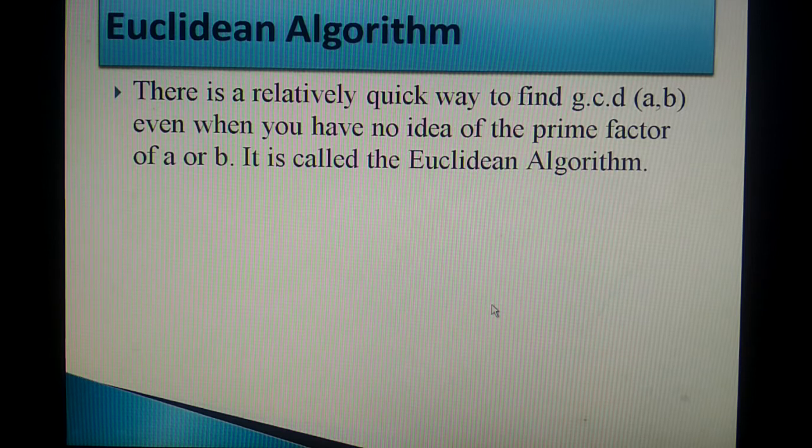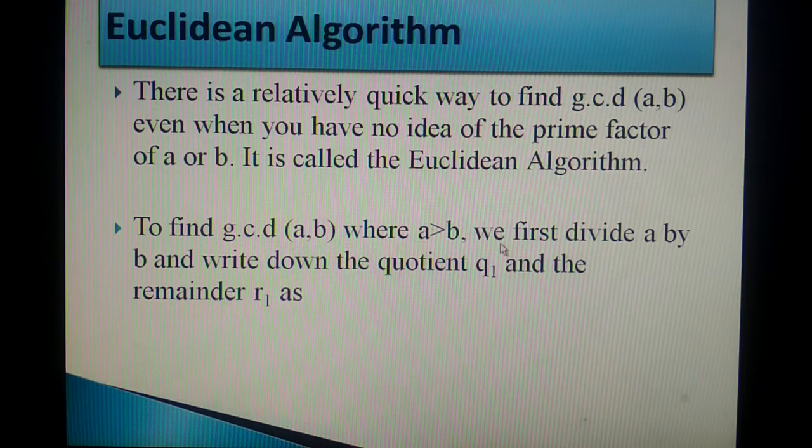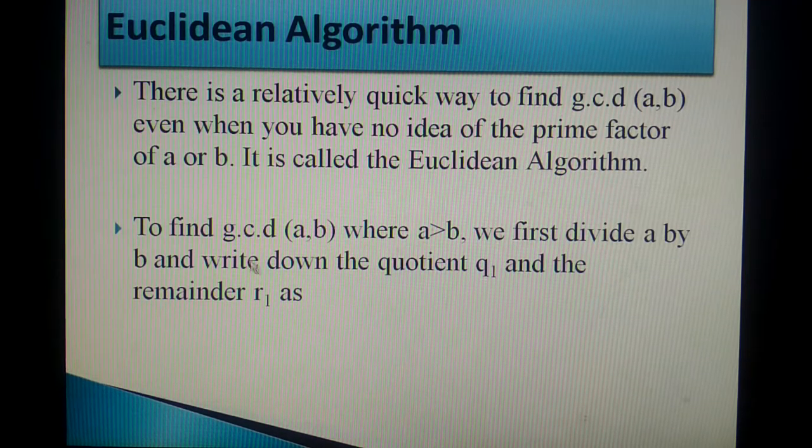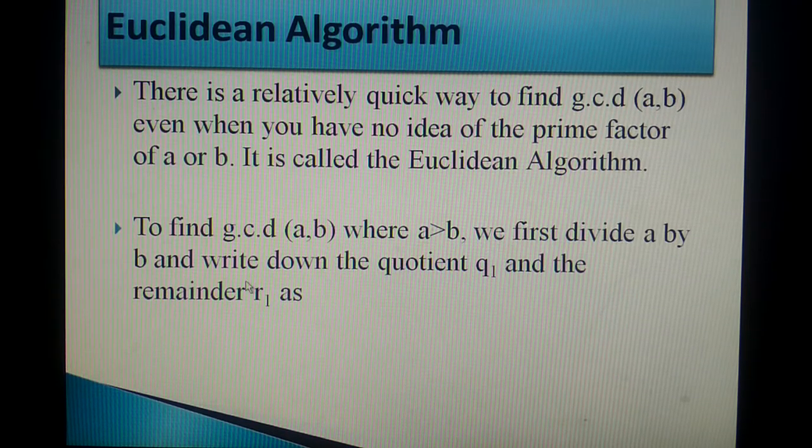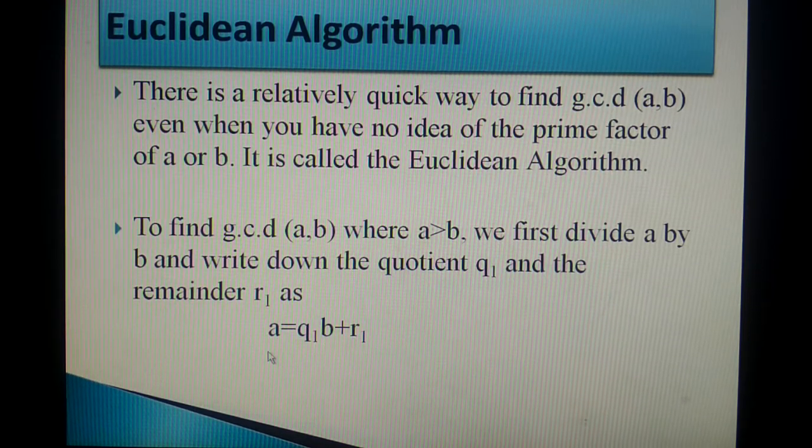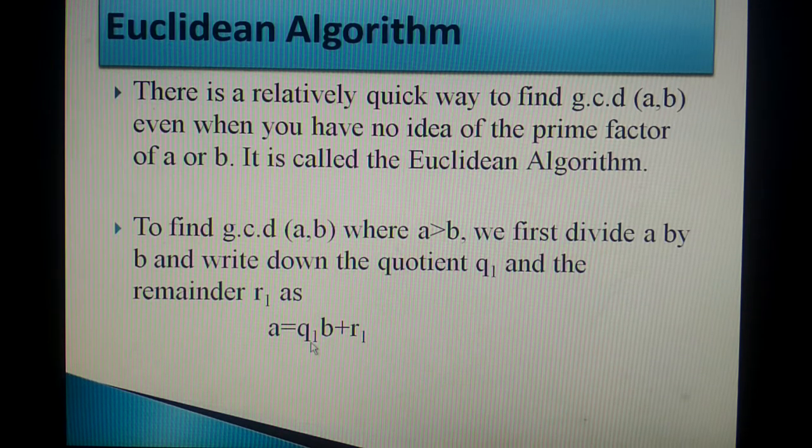Now let us see the algorithm. To find GCD of A comma B, this A value should be greater than B. We first divide A by B and write down the quotient Q1 and the remainder R1 as A is equal to Q1 into B plus R1. When we divide A by B, we are getting the quotient as Q1 and remainder as R1.